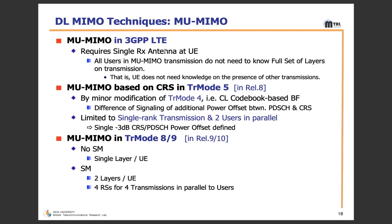MU-MIMO requires only a single receiver antenna at the UE. Users in MU-MIMO transmission do not need to know the full set of transmitted layers, making it simpler and reducing computational power — the UE does not need knowledge of other transmissions. In Release 8, CRS-based MU-MIMO is called Transmission Mode 5, using minor modifications from TM4 (closed-loop beamforming), but it is limited to single-rank transmission and two users in parallel.